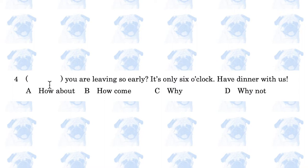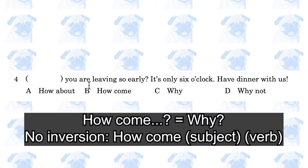Blank you are leaving so early — it's only 6 o'clock. Have dinner with us. The answer is B, how come. How come means why. And after 'how come,' there is no subject inversion, so you can't say 'how come are you leaving.' Instead, you must always say 'how come you are leaving.'